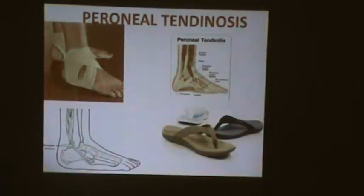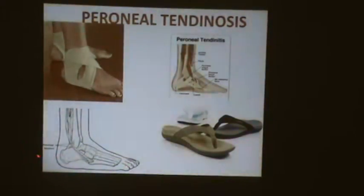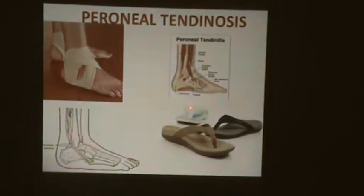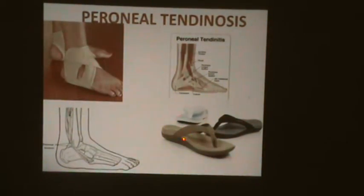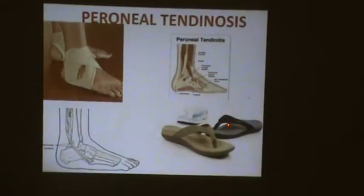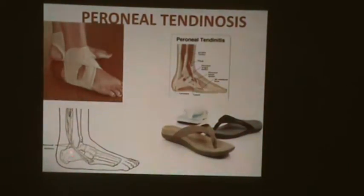On the outer side of the foot, similar to posterior tibial tendonitis on the inner side, is peroneal tendonitis — also a sequel of flat foot and pronated foot. We advise these patients to have special slippers or varus packs. In posterior tibial tendonitis, the elevation of the slipper is on the inner side, whereas in peroneal tendonitis it is on the outer side. We ask them to do exercises or to rest, and sometimes we have to release this fascia surgically.